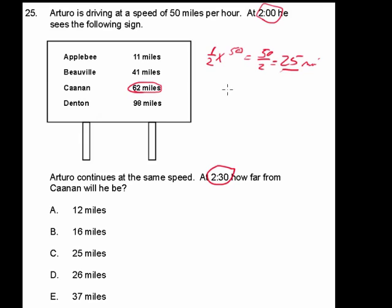So if he was 62 miles from Canaan at 2 o'clock, and he drove 25 miles in that time period, we have to subtract that distance because he's now closer to Canaan. So 62 minus 25, and that will give us 37 miles, which is answer number E.